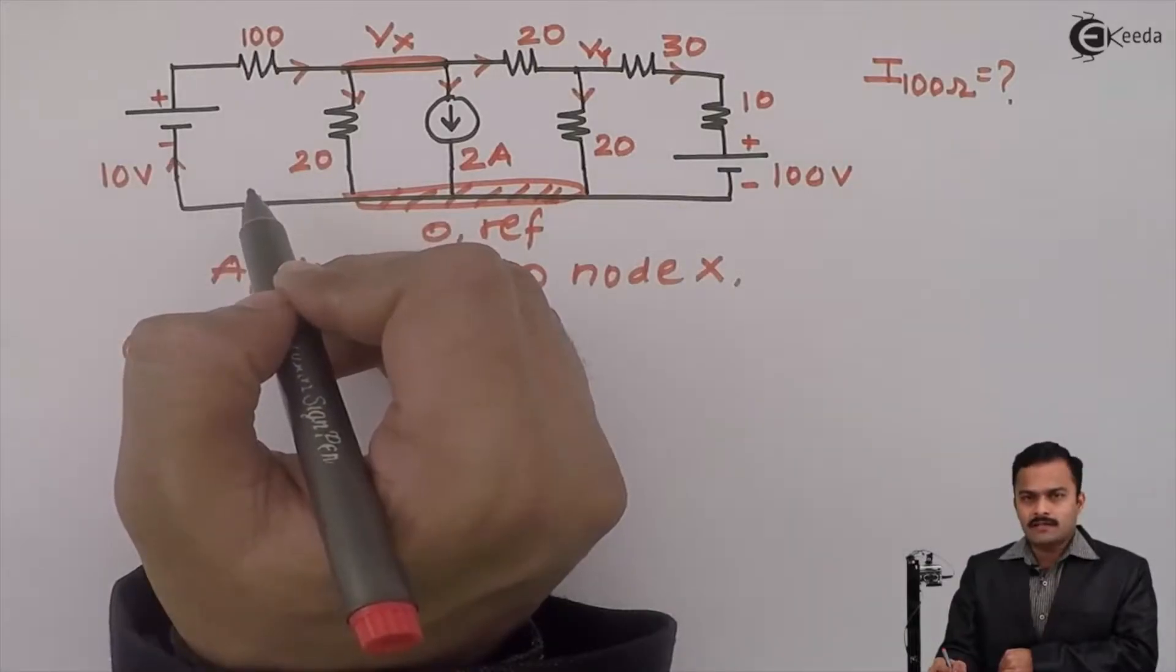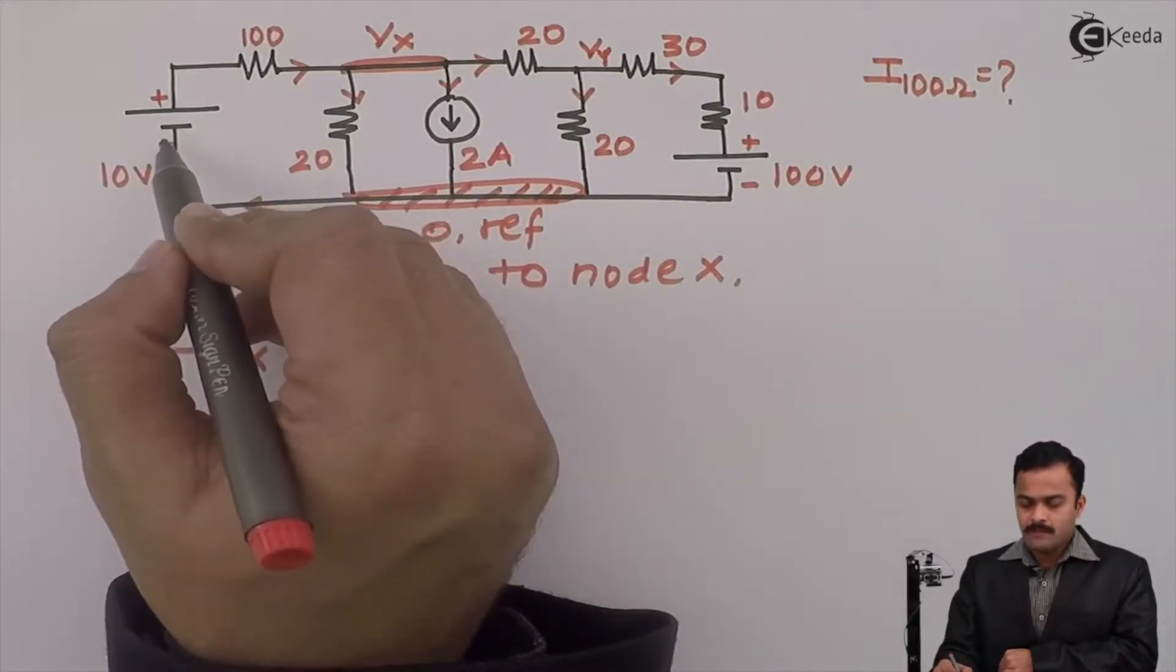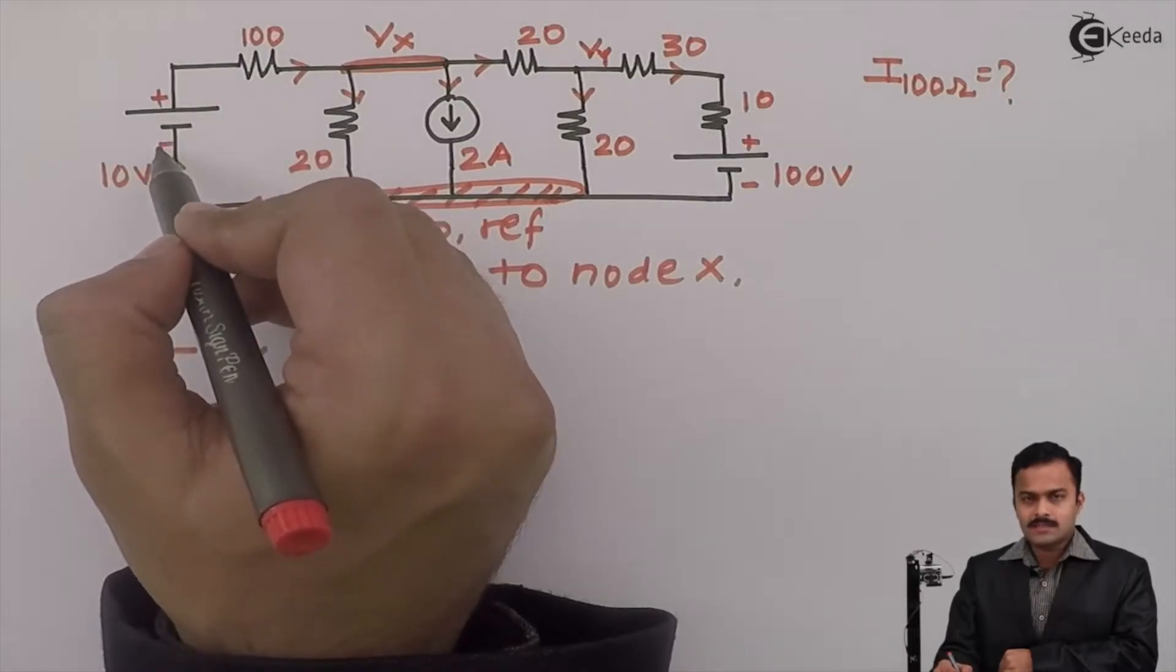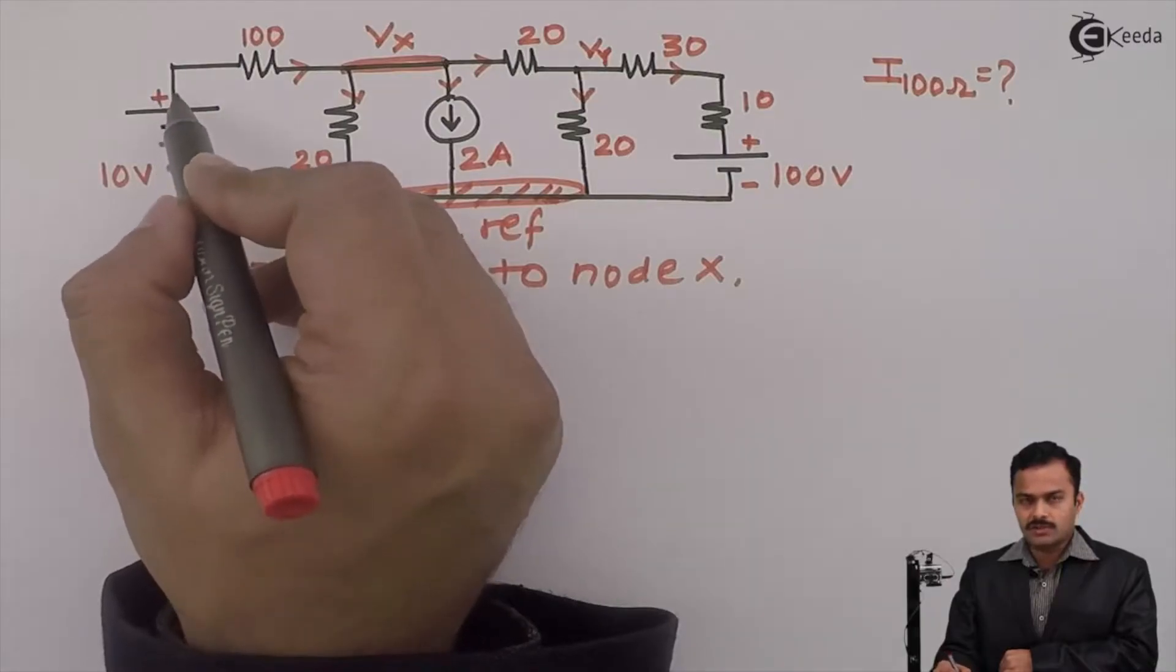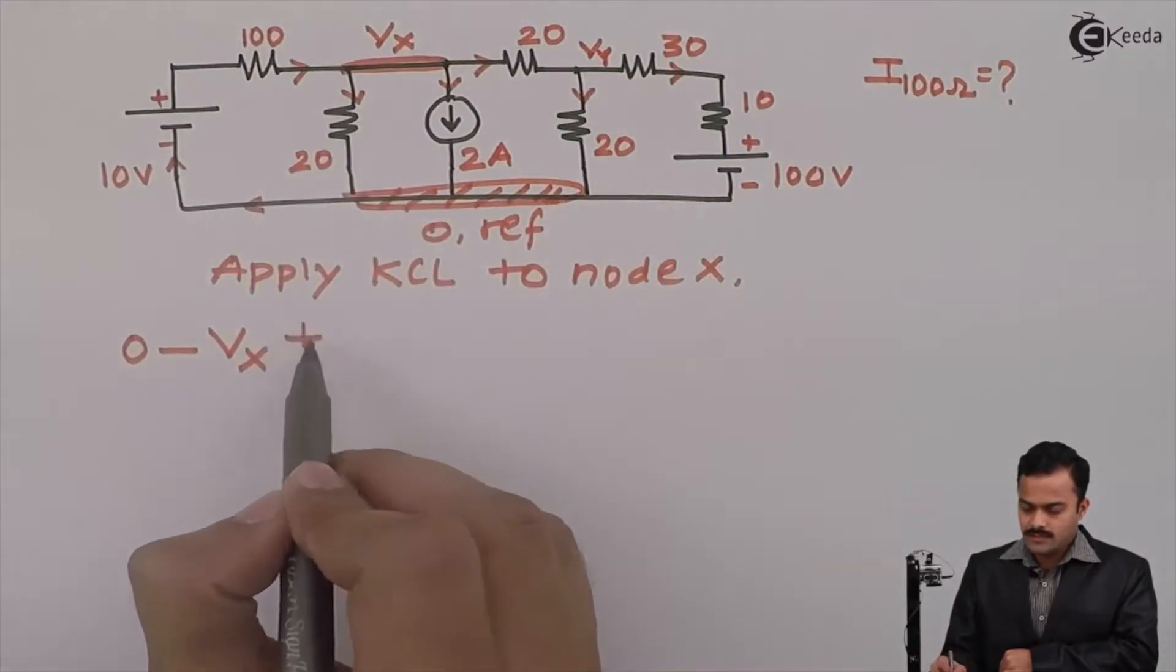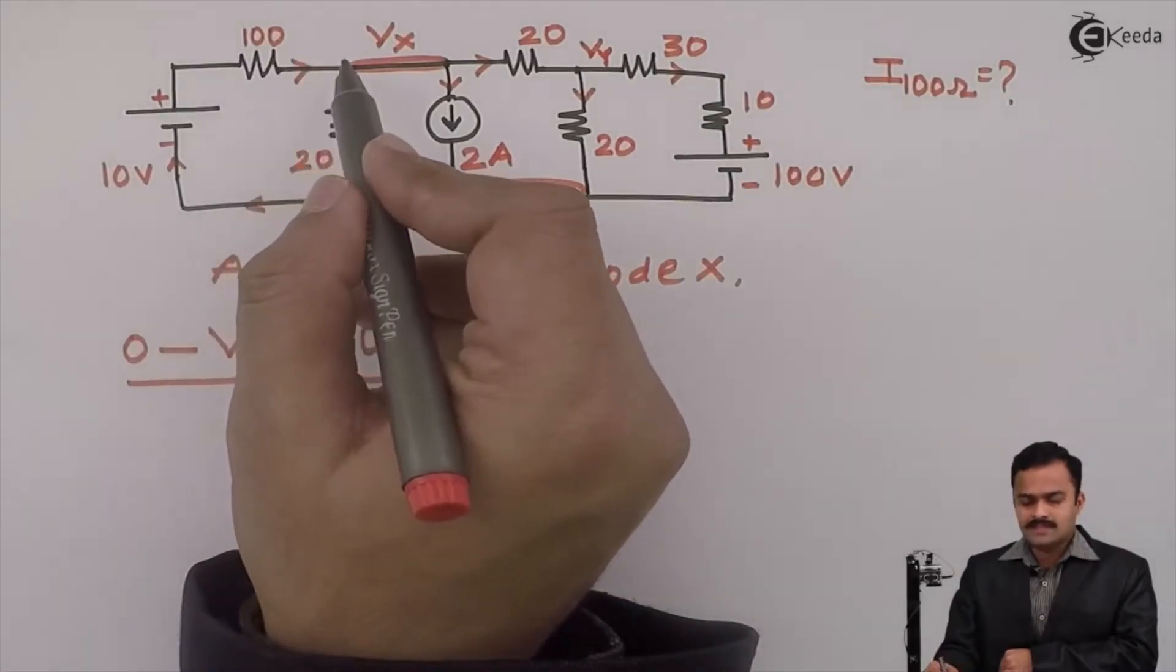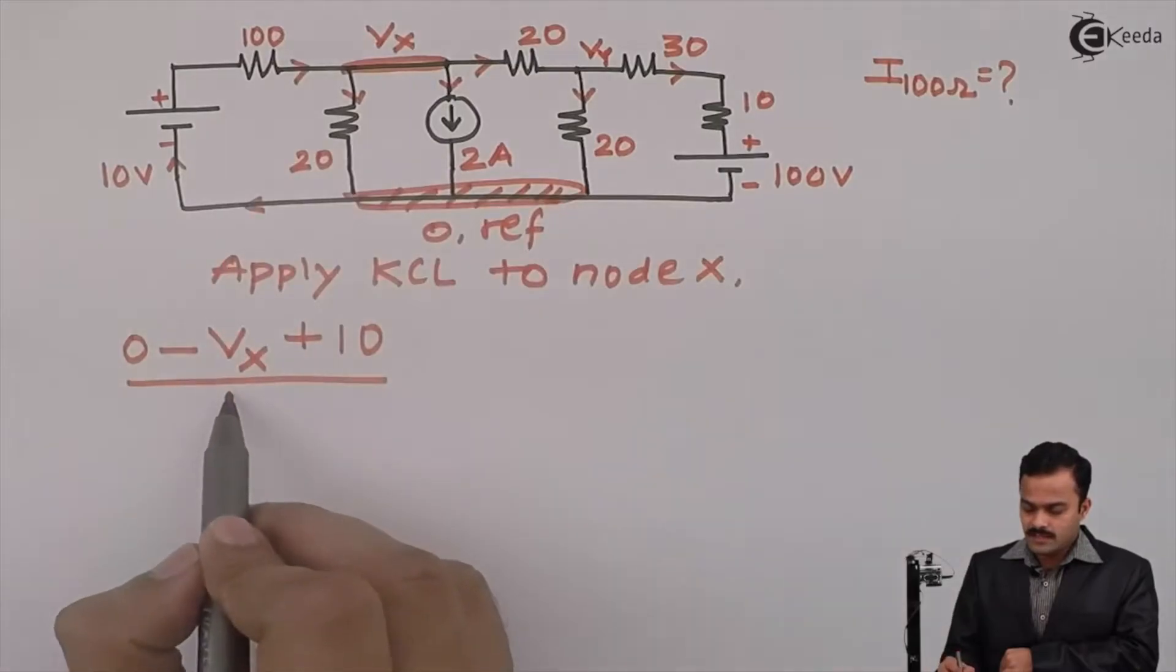In the direction of current that I have assumed, I am having a voltage rise, meaning voltage source changing its polarity minus to plus in the direction of current. So it's a voltage rise, plus 10, divided by total resistance of this branch, which is 100.